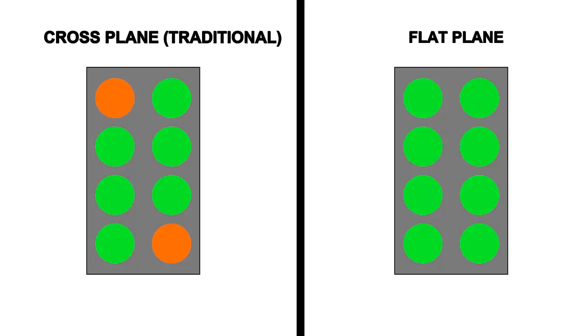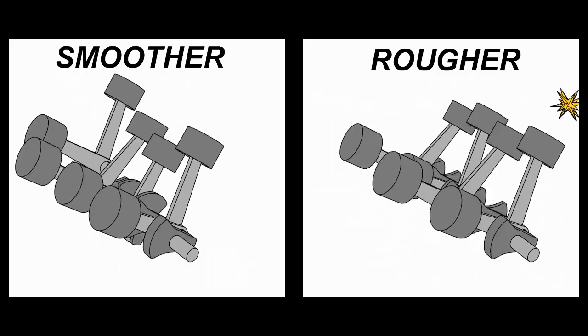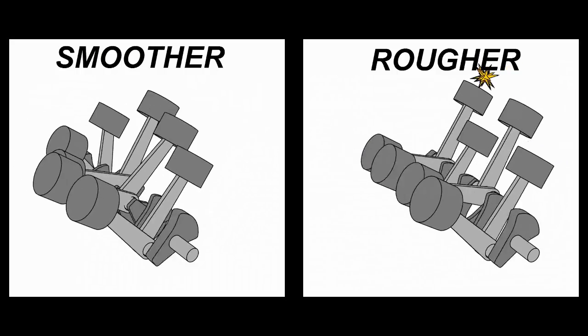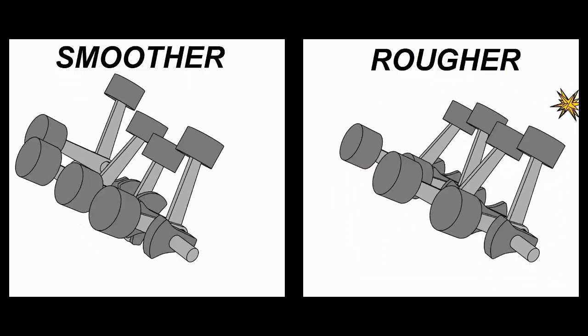So now that we've looked at some of the advantages of a flat plane crank, let's look at some of the downsides. The biggest one is NVH, or Noise, Vibration, and Harshness. Technically, the reason that you have extra vibration in a flat plane crank is due to secondary imbalance, or an issue with the secondary balancing of the engine.